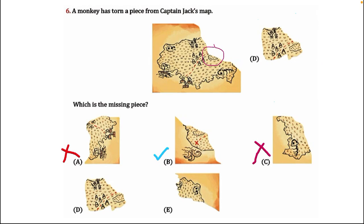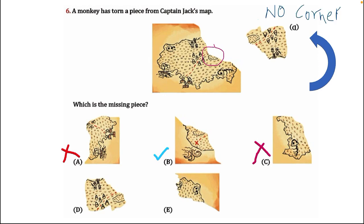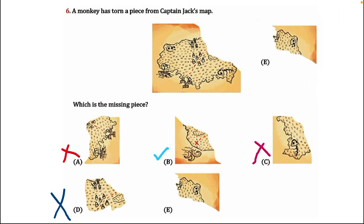Let's check option D. We have to check that there is no oval part. Secondly, there is no corner. So option D is wrong.